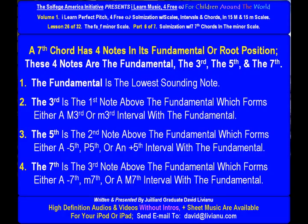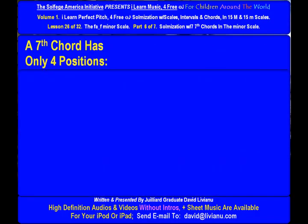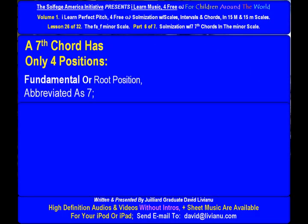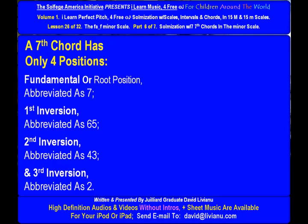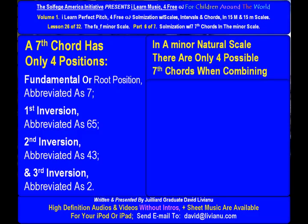The seventh is the third note above the fundamental, forming either a diminished seventh, minor seventh, or major seventh. A seventh chord has only four positions: fundamental or root position (abbreviated as 7), first inversion (abbreviated as 6-5), second inversion (abbreviated as 4-3), and third inversion (abbreviated as 2).